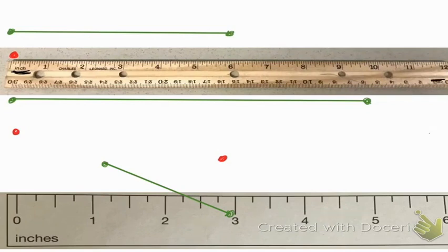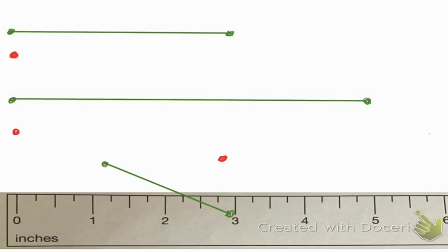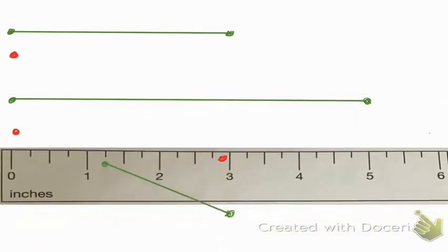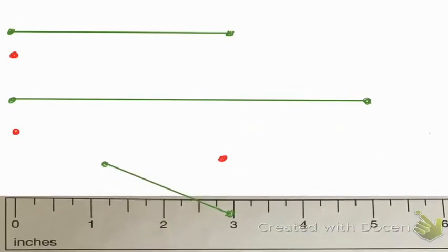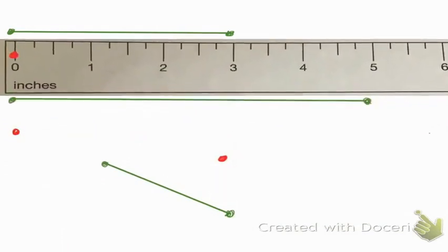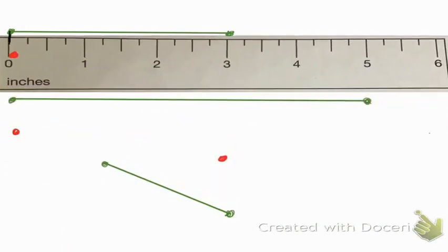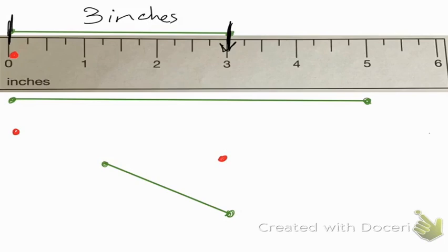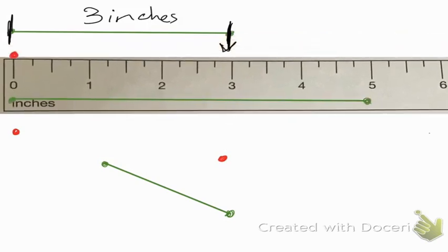Usually in class we have a wooden or plastic ruler, and you can see that it starts at zero. We have inches on one side and centimeters on the other. For this demonstration I'm going to use about a half a foot — six inches. It's important when measuring a line segment to start where the zero is. I place the ruler starting at zero and it ends at three, so this line segment is three inches. We'll be talking about the three different ways to write three inches in class.